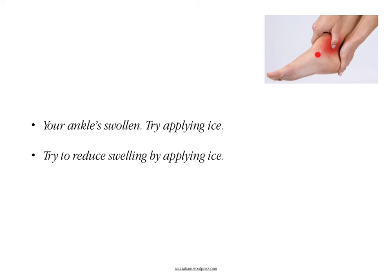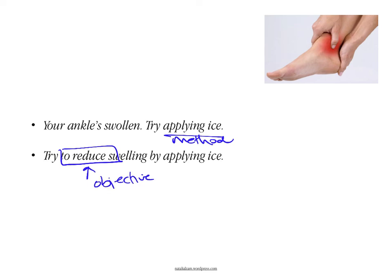As you can see in the picture, this person's ankle is swollen. I might suggest 'Try applying ice' — that's the method I'm suggesting. Or I could say 'Try to reduce swelling' — that's the objective. To reinforce the idea of methodology, you could add 'by': 'Try to reduce swelling by applying ice.' If using just one sentence with only the -ing form, you don't need the preposition, but when you've already used the infinitive, adding 'by' helps show the contrast between method and objective.